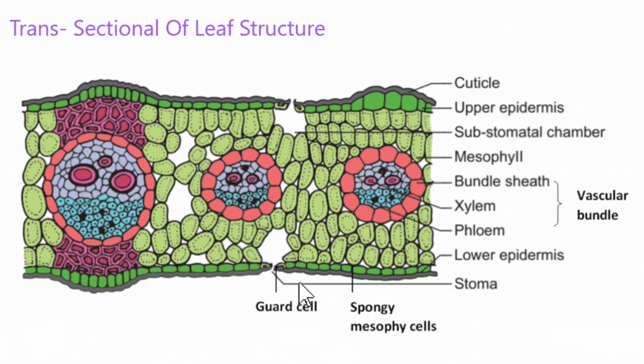The guard cells are in the epidermis of the leaf. The minute openings on the epidermis are called stomata, that surround the guard cells.